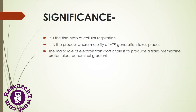The electron transport chain is the final step of cellular respiration where ATP is generated. The majority of ATP generation takes place during this process. The major role of the electron transport chain is to produce a transmembrane proton electrochemical gradient, which helps to produce ATP.